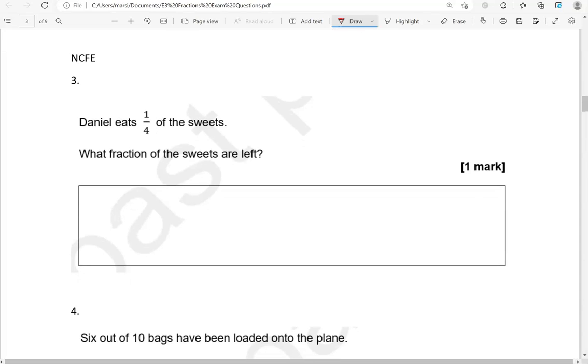Daniel eats a quarter of the sweets. Daniel has some sweets and he eats a quarter of them. What fraction of the sweets are left? If he eats one quarter, what's left is three quarters. So three out of the four pieces.